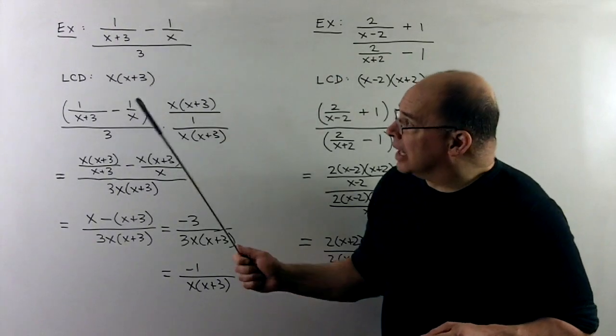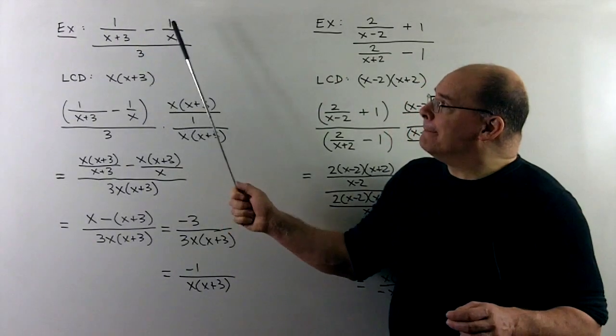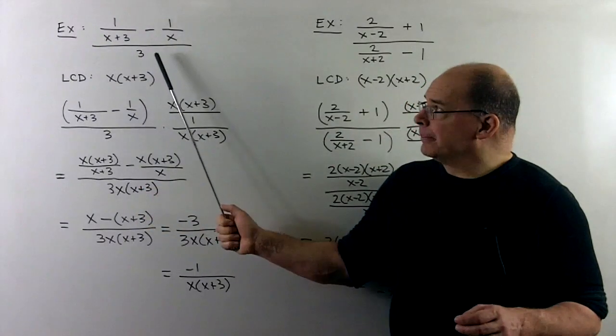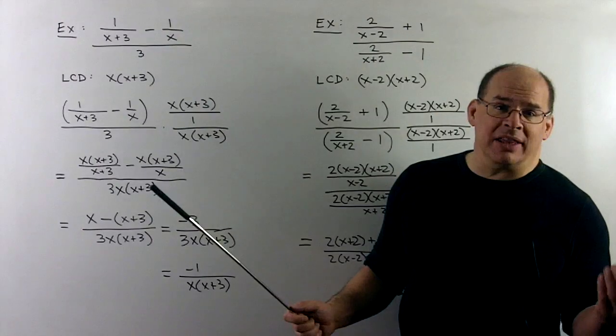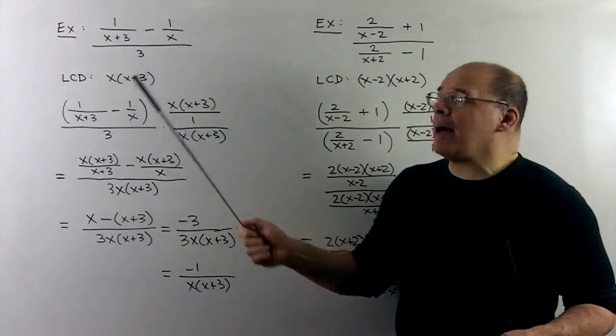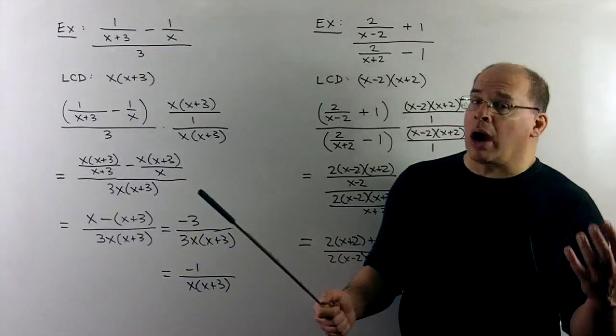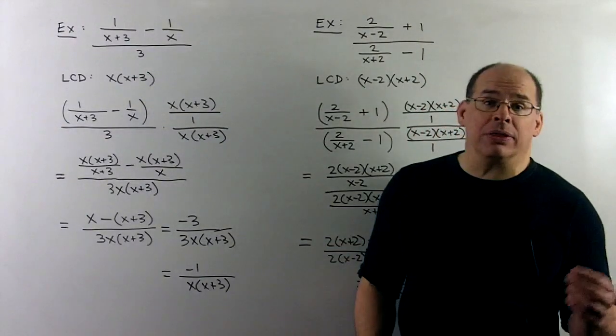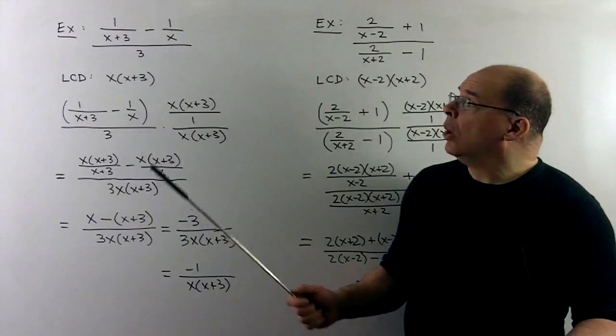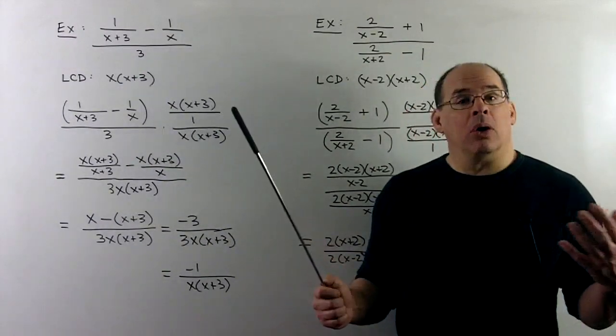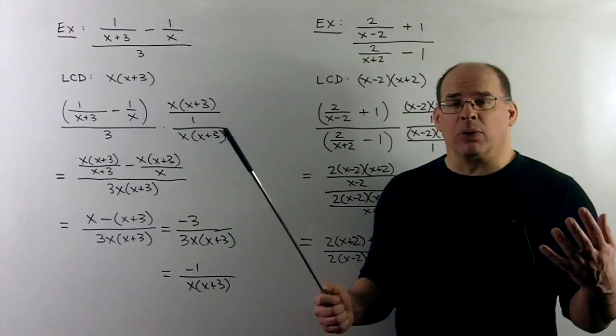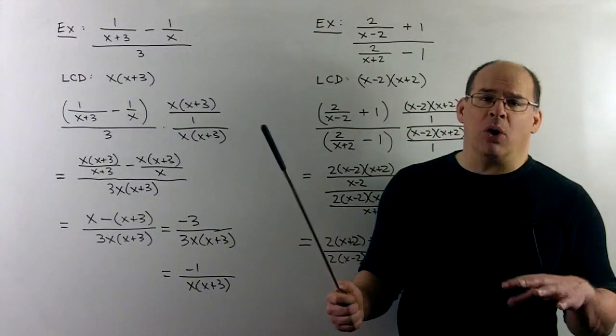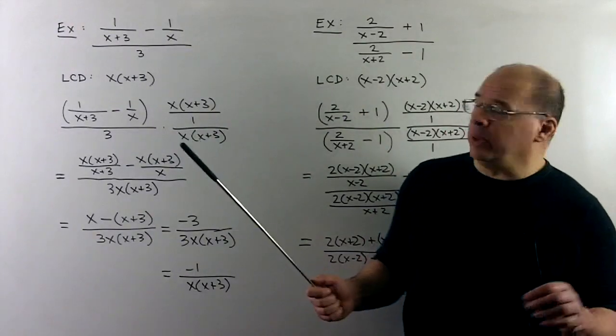Next example, let's try 1 over x plus 3 minus 1 over x, whole thing over 3. Now here we don't have a fraction in the denominator. Is that going to be a problem? No. Our options are, if I want a fraction down here, I could just turn it into 3 over 1, proceed as before. Or we note, the whole reason for putting our LCD over 1 is to keep fractions lined up. But I don't have to keep it over a 1 if I don't need it. So that's the way we'll go here.